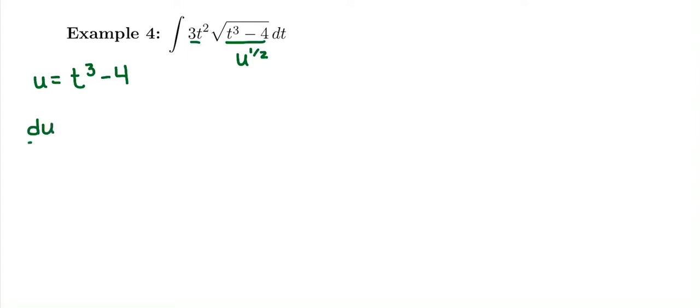And then we're going to take the derivative of what we just found, du dt. Derivative of t cubed is just 3t squared. Derivative of negative 4 is 0. And then we're just going to multiply both sides by dt. That way we can cancel out that denominator and have our u and our du.